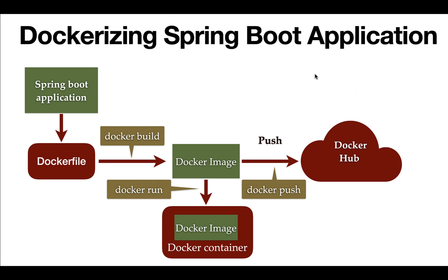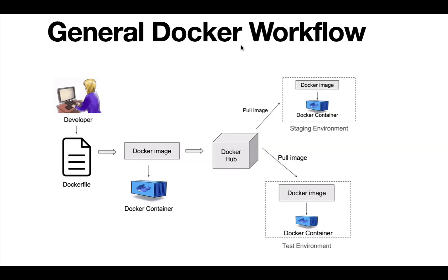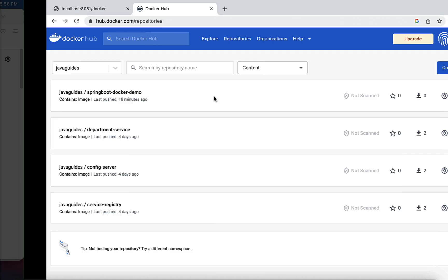Hi everyone, welcome back. In the previous lecture we saw how to push a local Docker image to Docker Hub. In this lecture we'll see how to pull a Docker image from Docker Hub and run it in a Docker container. Looking at the general Docker workflow, once we push a Docker image to Docker Hub, we can pull it and deploy it in different environments.